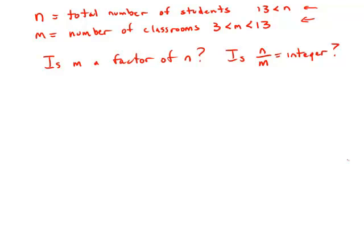Well, statement number one tells us that it is possible to divide 3n of the students to the m classrooms such that each classroom gets the same number of students in it.